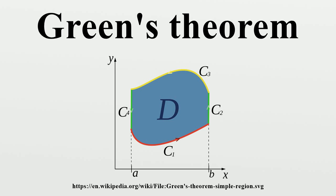With C1, use the parametric equations X equals X, Y equals G1, and X in A B. Then with C3, use the parametric equations X equals X, Y equals G2, and X in A B. Then the integral over C3 is negated because it goes in the negative direction from B to A, as C is oriented positively.